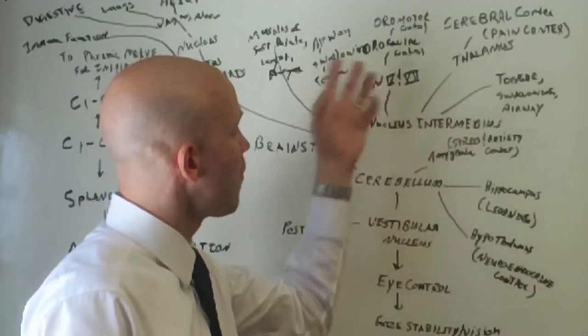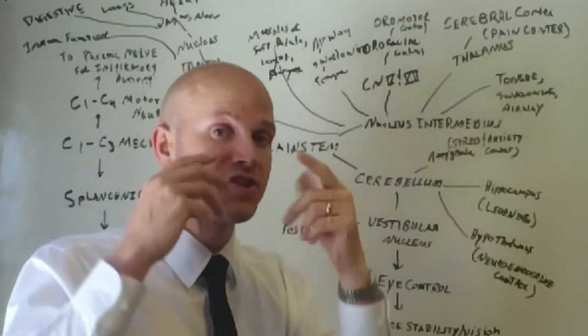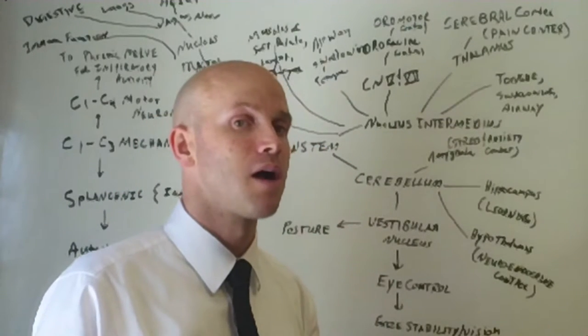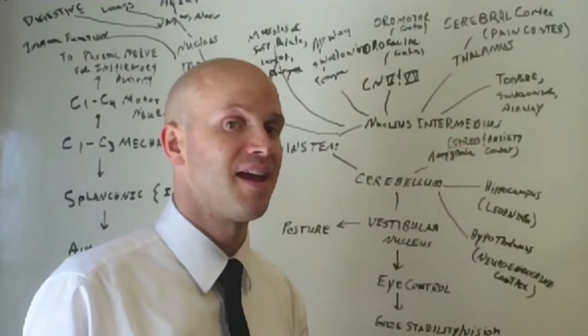The cranial nerves five and seven, orophacial, oral motor control, your ability to feel in your face, as well as move your jaw so you can chew your food.